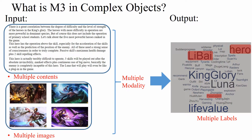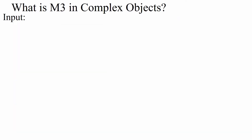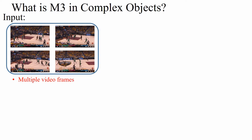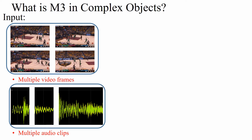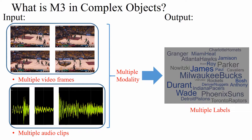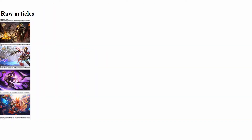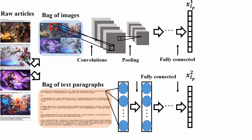Another example is video classification. We have multiple video frames and multiple audio clips, while we wish to predict multiple labels — that is, James, Cavaliers — accurately. Specifically, we input the heterogeneous bag of multimodal instances separately, and make label prediction with the novel bag concept for different modalities.